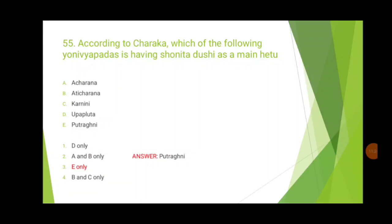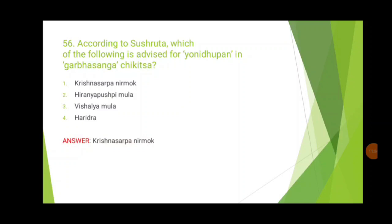The 55th question: according to Charaka, which yoni vyapath has shona dushti as a main hetu? Yoni vyapath is extensively asked every year; study all 20 yoni vyapath — dosha predominance, causative factors, main lakshana, and yogas used. The answer here is putrekni. The 56th question: according to Sushruta, which is advised for yoni dhupana in garbha sangha chikitsa? The answer is krishna sarpa nirmoka. Also learn apara sangha chikitsa from Sushruta and Ashtanga.